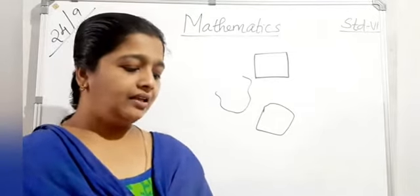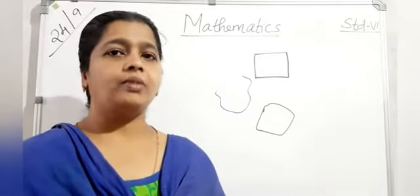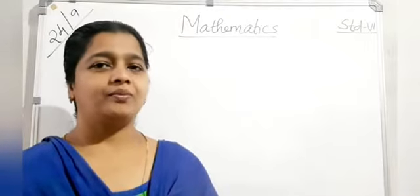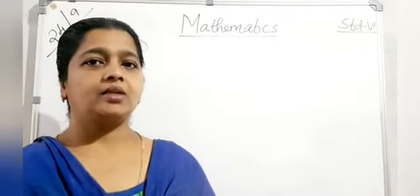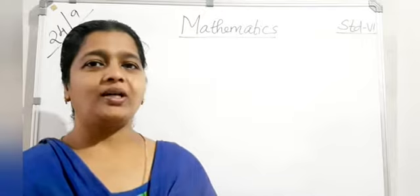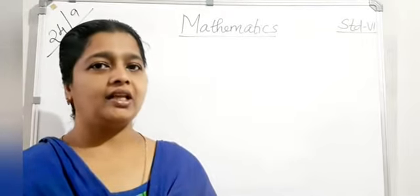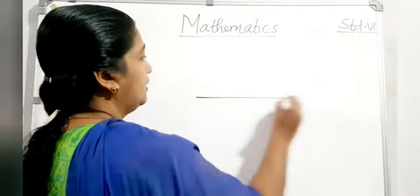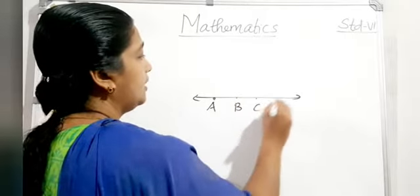These are the main topics from this chapter. Now for the last chapter we discussed: a point determines a location and is always represented using capital letters. The distance between any two points is called a line segment.